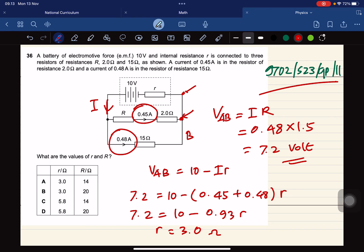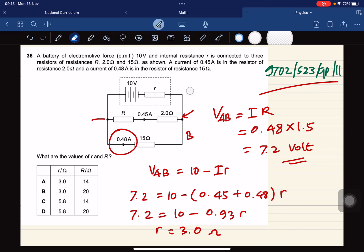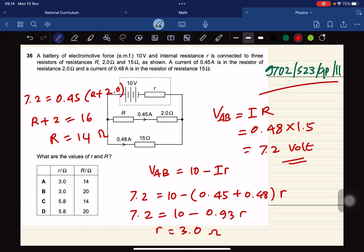Okay what about R capital? From this, this point to this point. So 7.2 means I, 0.45 times R plus 2. So R plus 2 equals to 7.2 divided 0.45. This equals to 16. So R equals to 16 minus 2, 14 ohms.